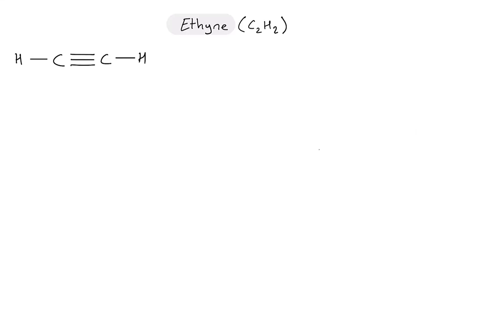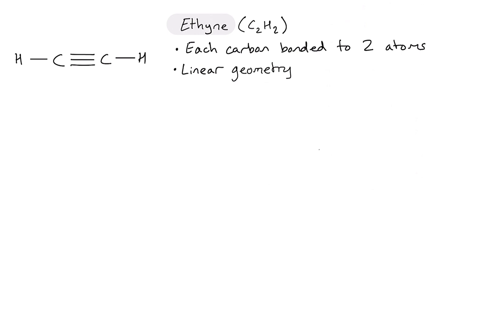Now analyzing ethyne: each carbon is bonded to two other atoms. It has a linear geometry around each carbon — a straight line across the molecule. From the Lewis diagram, each carbon is going to have two sigma bonds and there will also be two pi bonds formed between them.